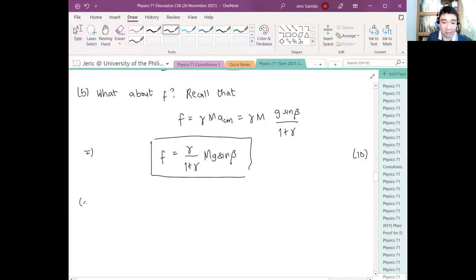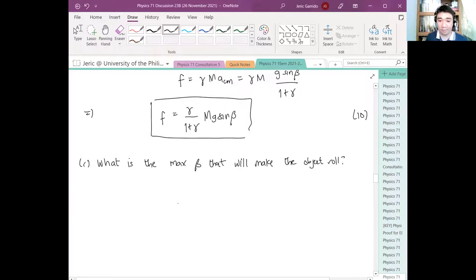And then finally for letter C, what is the maximum beta? Remember, the maximum... this is true because we're looking for the maximum beta, and the frictional force, the maximum frictional force happens when it is proportional to the normal force. This is true so FS maximum equals mu S N. This is true for the maximum static friction.